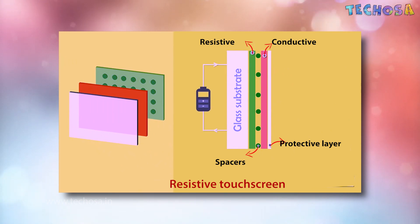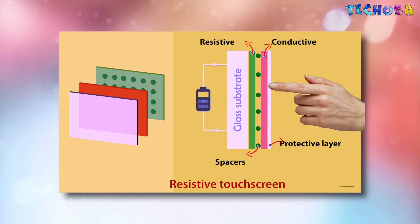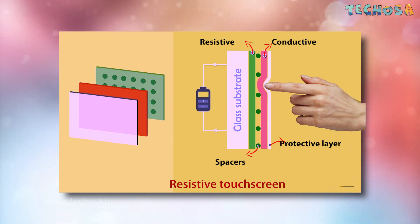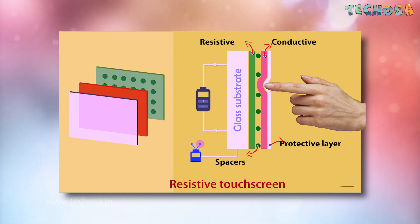Each layer is covered with a thin metallic layer, separated by a narrow gap. When a user touches the screen, the two metallic layers make contact, resulting in electrical flow. The point of contact is detected by this change in voltage.